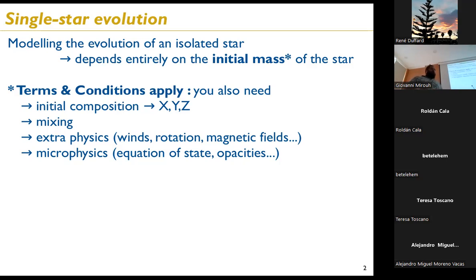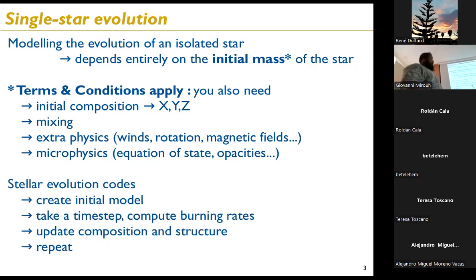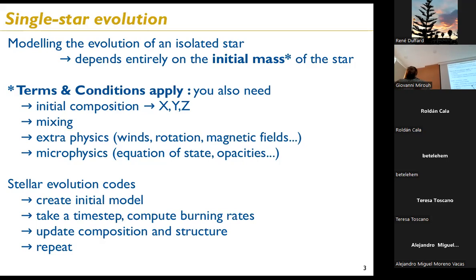Of course, terms and conditions apply. You also need to know the initial composition, mixing properties, additional physics such as rotation and magnetic fields, and the microphysics such as equations of state and opacity. Star evolution codes follow the same scheme: start from a given model, take a time step computing how much material to fuse in the core, update the composition, update the structure, and repeat.